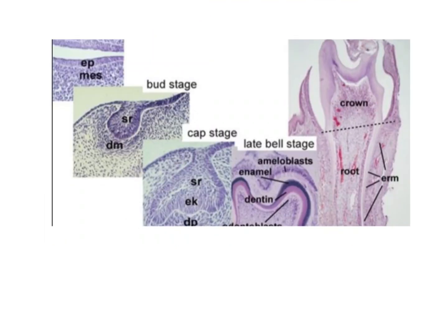This is the oral ectoderm and this is the mesenchyme. It forms the dental bud where it has the epithelial cells. From the epithelial cells it goes to the cap stage, where you have the stellate reticulum, the dental papilla, the outer enamel epithelium, and the inner enamel epithelium. This forms the outer enamel epithelium whereas this is the inner enamel epithelium.